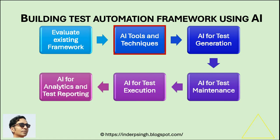Step two: Select AI tools and techniques. Choose the right AI tools. For example, Generative AI in software testing can auto-generate test cases. AI in testing can identify patterns in failures and predict defects. Intelligent Test Automation can execute automation using automated testing tools and analyze test results.